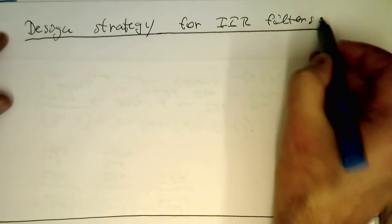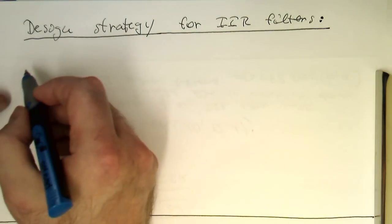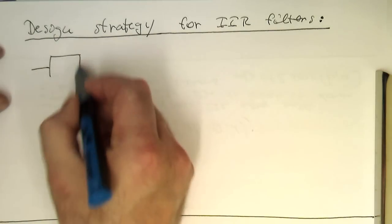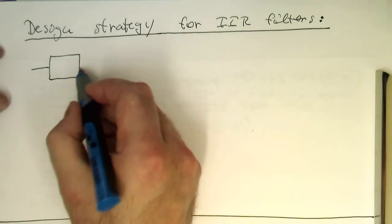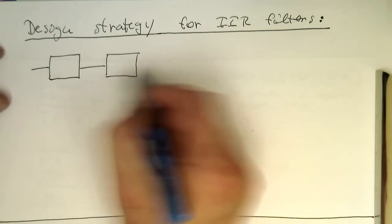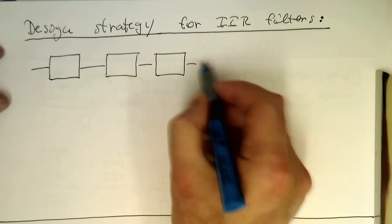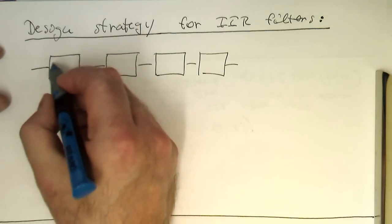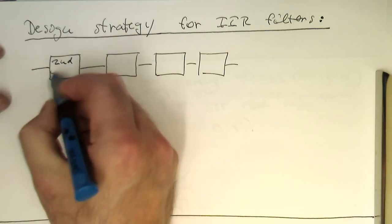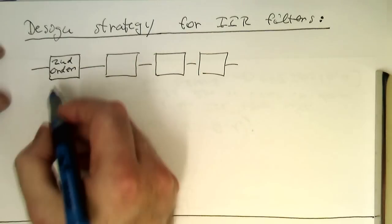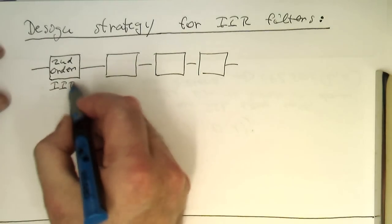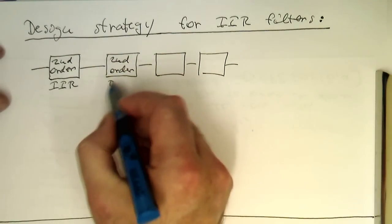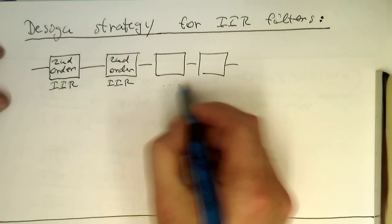And so remember, the design strategy is the best one is that we break down our IIR filter and create a chain. That's a second order filter IIR and another second order IIR and so on and so on.